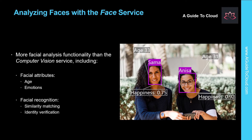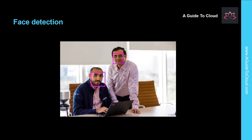Let's understand how you can analyze faces with the face service. Face detection and analysis is an area of artificial intelligence in which we use algorithms to locate and analyze human faces in images or video content. Face detection involves identifying regions of an image that contain a human face, typically by returning bounding box coordinates that form a rectangle around the face, as shown in the image.